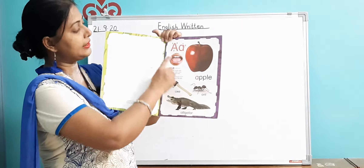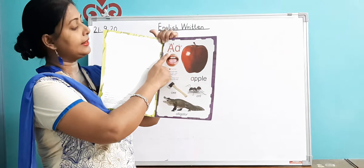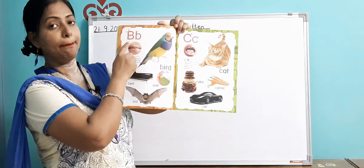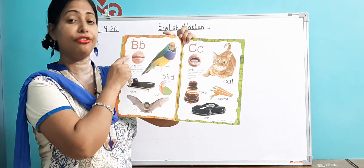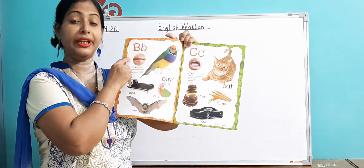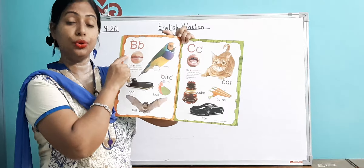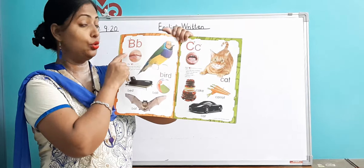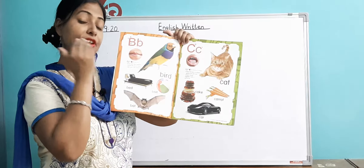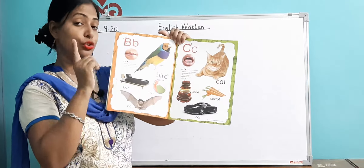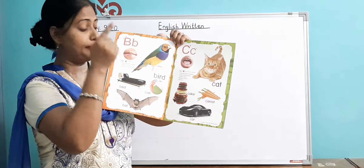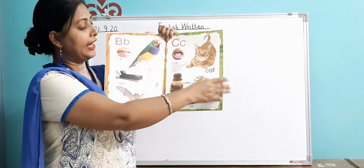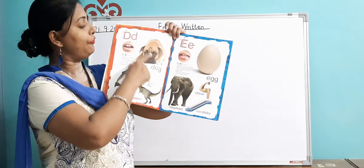We are just going to revise the alphabets. This is alphabet A — A for apple. This is B — B for bird. After A comes B. C for cat, D for dog.